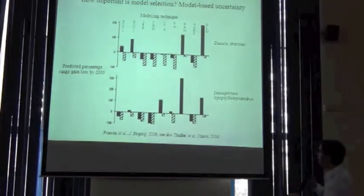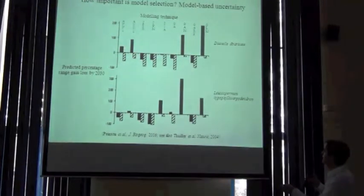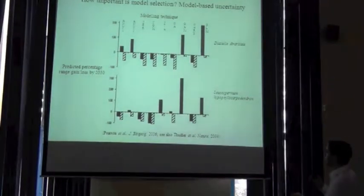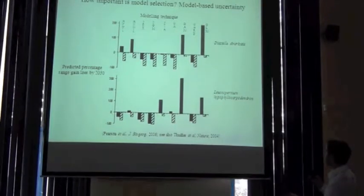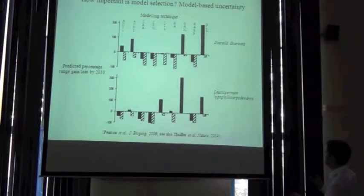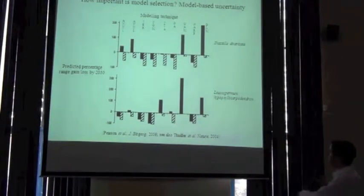The only important point I want to emphasize now is that you get very different predictions from the different models. So this particular species, for one model, GAM was predicting that this species could expand massively.